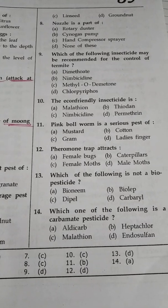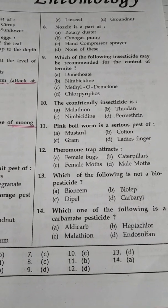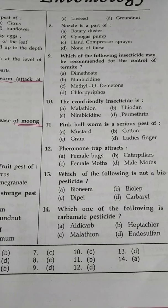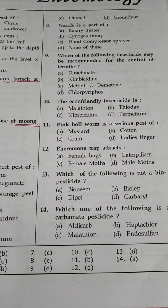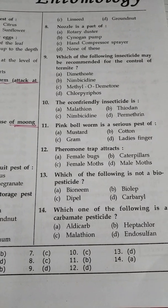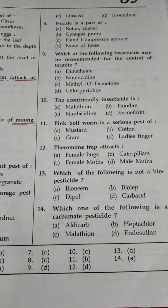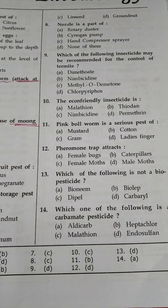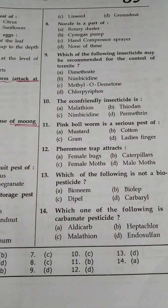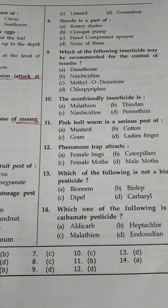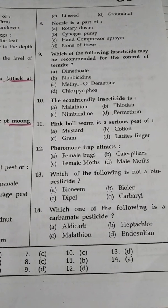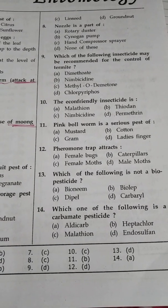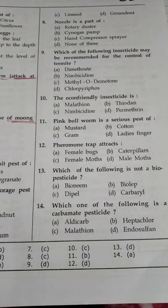Question number 9: Which of the following insecticide may be recommended for control of termite? Option A dimethoate, option B nimbicidine, option C methyl oxydemeton, option D chlorpyrifos. For control of termite, chlorpyrifos is recommended — please remember chlorpyrifos is recommended for control of termite.